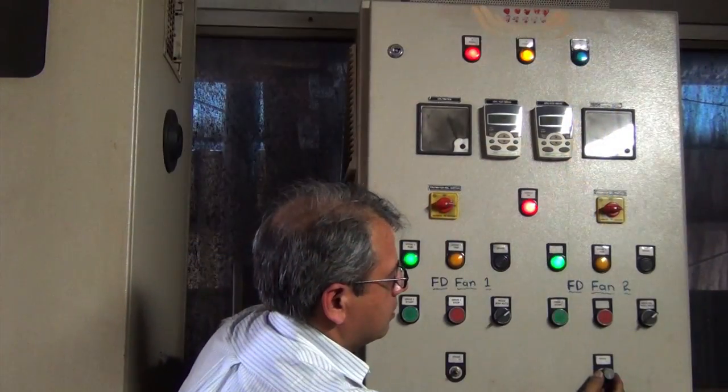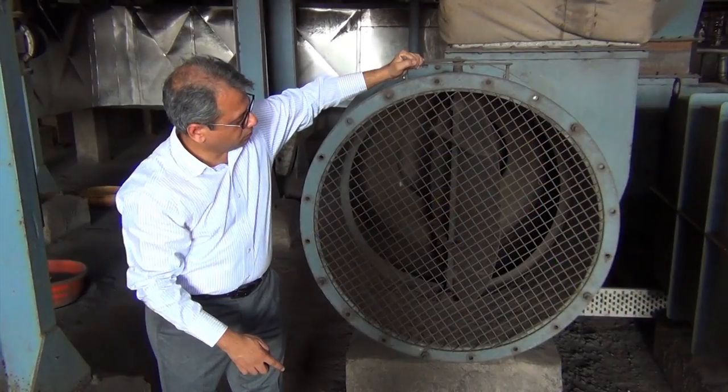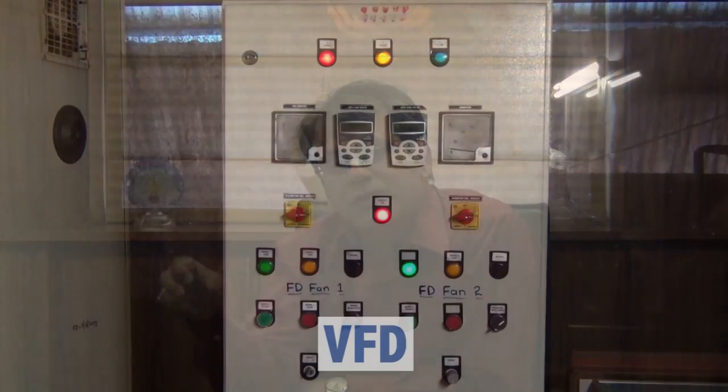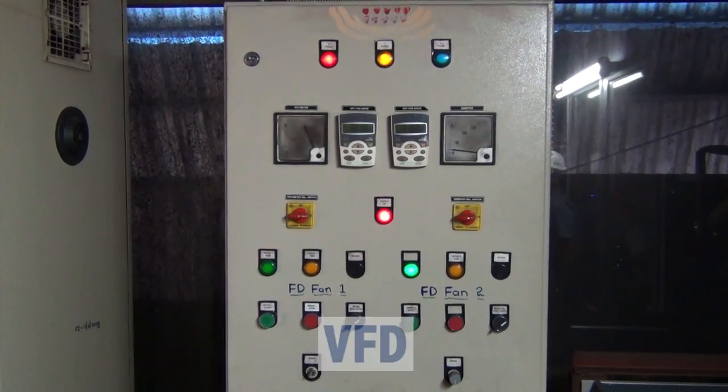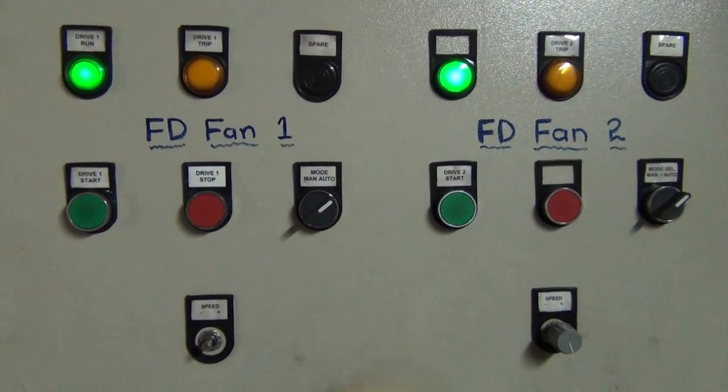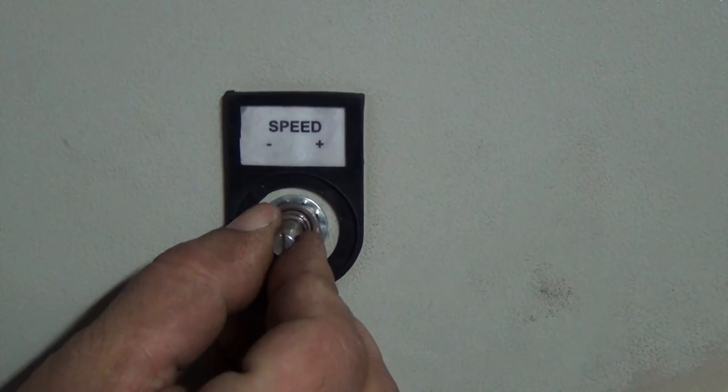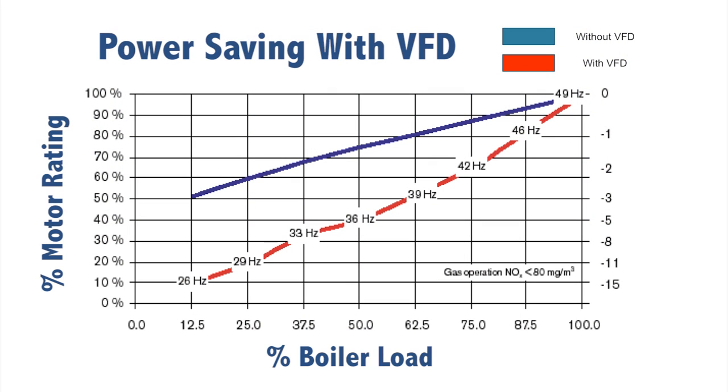This excess air can be controlled by either adjusting the speed of the FD fan or by doing the adjustment in the damper settings. Both methods are equally good and equally well accepted. The speed of the FD fan can be reduced by two methods: one is by using a potentiometer and one is by using a variable frequency drive. Variable frequency drives, or variable speed drives, are now increasingly becoming popular as a tool to alter the FD fan speed.